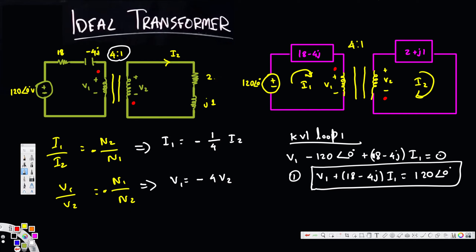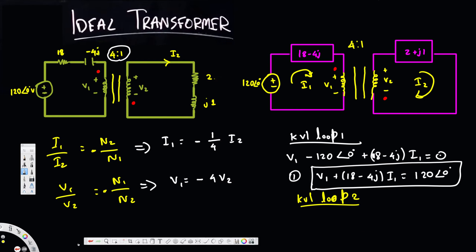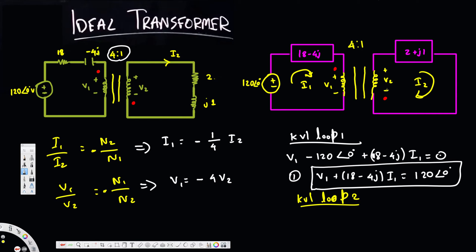For KVL in loop two: I2 enters V2 from negative to positive giving negative V2, then through the impedance giving (2 plus j1) times I2, all equal to zero. This gives us our second equation.